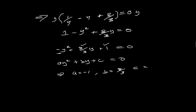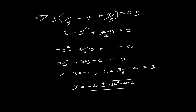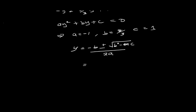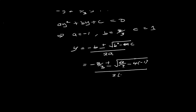Substituting into the quadratic formula: Y equals minus b plus or minus the square root of b squared minus four a c, all over two a. Substituting our values: minus eight over three plus or minus the square root of eight over three squared, which is 64 over nine, then minus four times negative one times one, all over two times negative one.